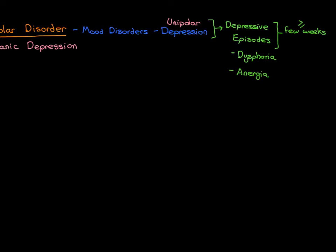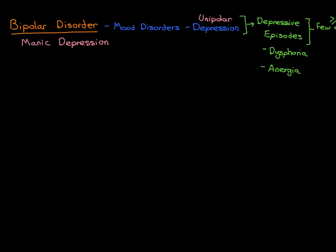Let me draw a little graph that is helpful when talking about mood disorders. On the y-axis we have mood or energy, and on the x-axis we have time. In a normal person, your mood and energy fluctuate on a daily basis, congruent with what's actually happening in your life. If someone gives you a free ice cream, your mood goes up; if you fail an exam, your mood goes down for a while.